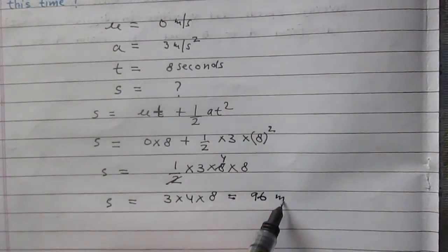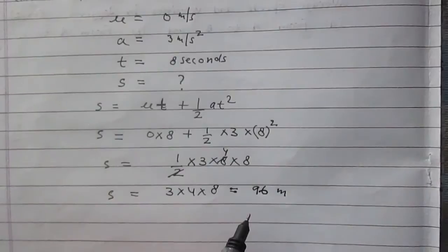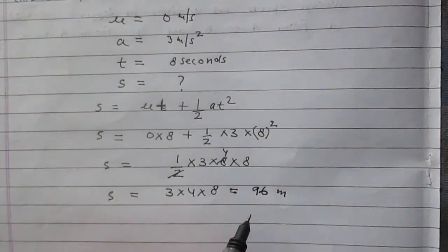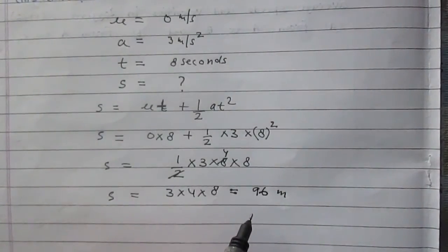So 96 meters. The displacement traveled by the boat in 8 seconds is 96 meters.